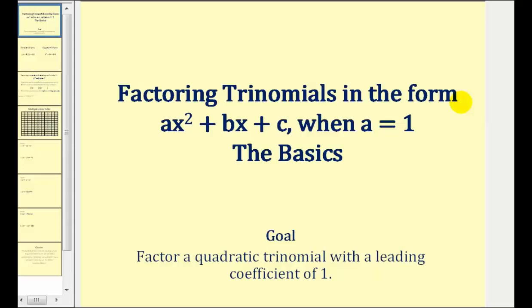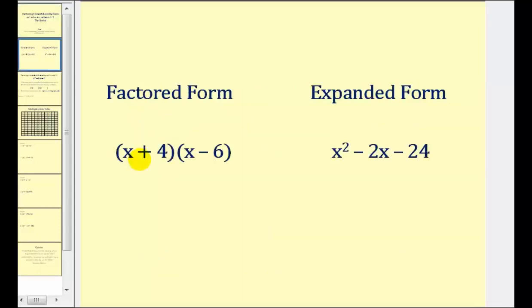Welcome to a video that will cover the basics on how to factor trinomials in the form of AX squared plus BX plus C when A is equal to 1, which means the first term will be X squared. We just finished learning how to multiply two binomials together, meaning we were given something in factored form and then we multiplied it out in expanded form. Now we're going to be doing the opposite — given a trinomial in expanded form, we're going to write it in factored form.